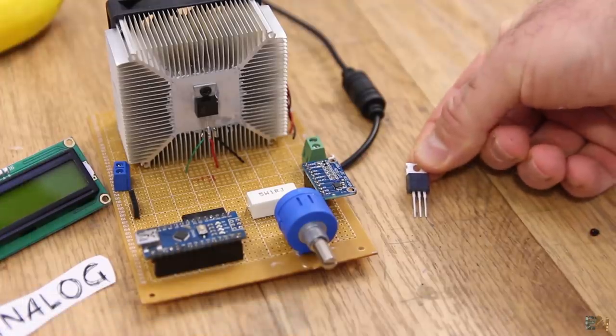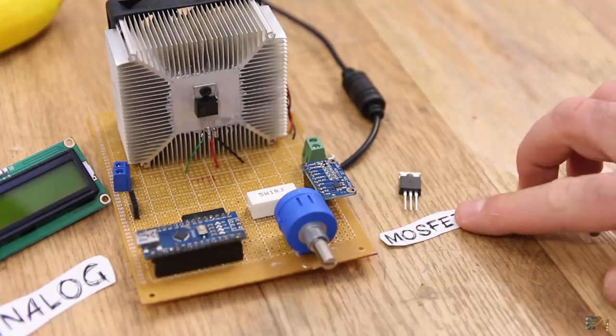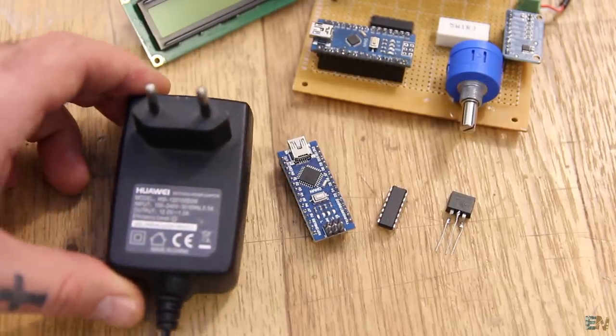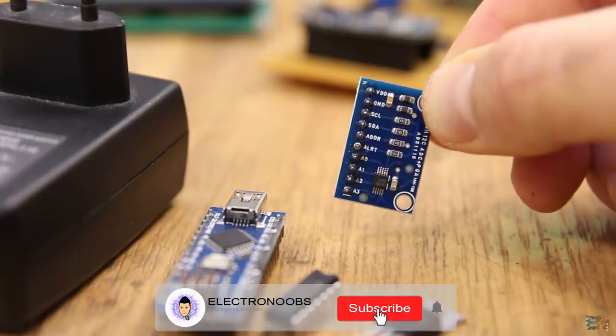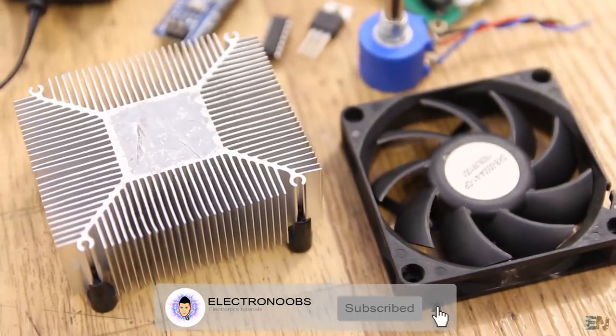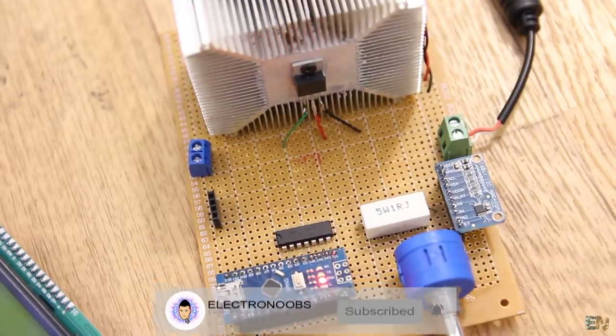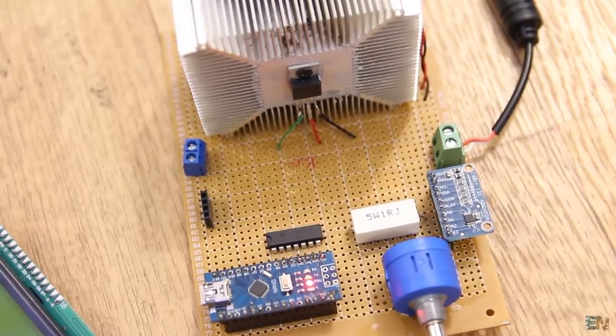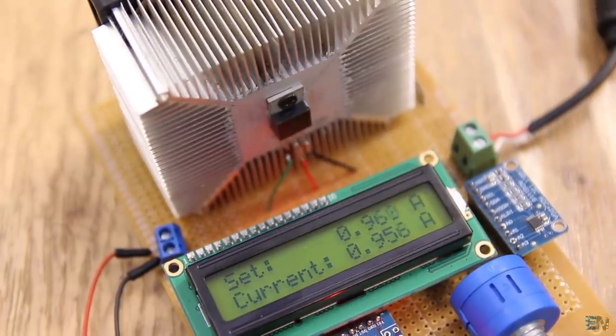But today we will see how this analog circuit works and how I've built this device. I will also tell you what to have in mind when selecting the MOSFET, the supply voltage, and the heat dissipator. So make sure that you subscribe and activate the notification bell. Consider supporting my work on Patreon, so let's get started.